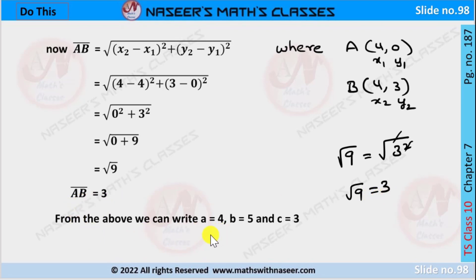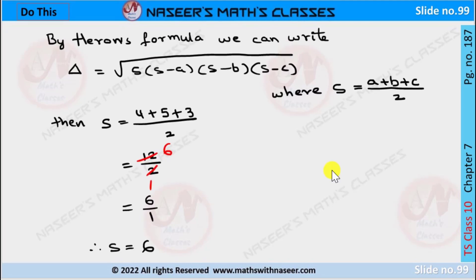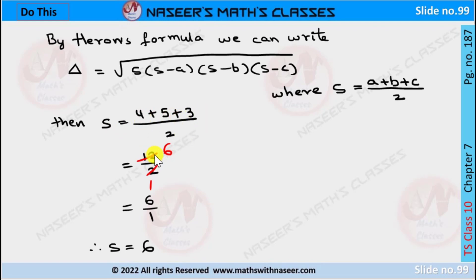From the above we write a = 4 units, b = 5 units, and c = 3 units. These are the lengths of the sides of the triangle. By Heron's formula, the area delta equals the square root of S(S minus a)(S minus b)(S minus c), where S = (a + b + c) / 2. Substituting: S = (4 + 5 + 3) / 2 = 12 / 2 = 6. Therefore S is equal to 6.